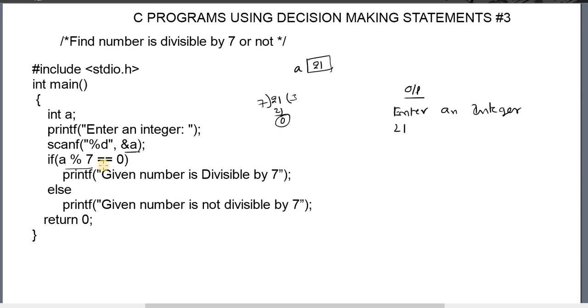The double equal to operator is used to compare two operands. One side the result of this expression is 0, another side also 0, which means equal. If it is equal, the result of this expression is 0.